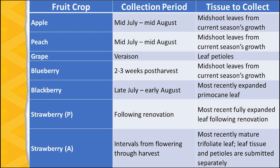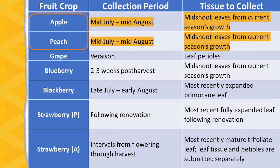Sampling for tissue analysis varies among the different types of fruit as far as the best time to collect the sample and the proper type of tissue to collect. Looking at apples and peaches, tissue samples are collected from mid-July to mid-August, and mid-shoot leaves from current season's growth is the type of tissue that is sampled.